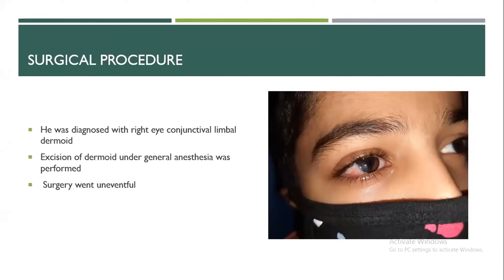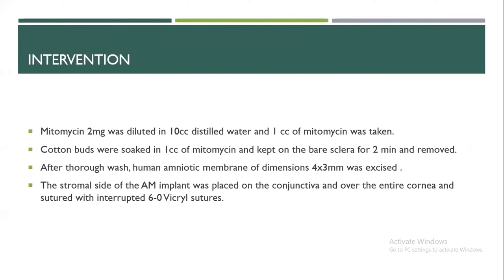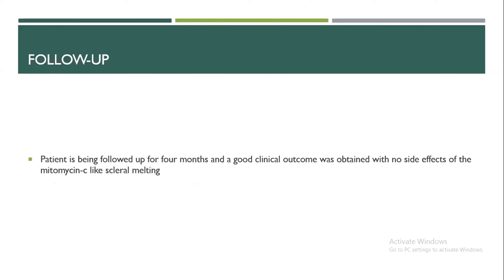Coming to the surgical procedure, he was diagnosed with right eye congenital limbal dermoid for which excision was done under general anesthesia and the surgery went uneventful. The intervention: we used mitomycin C of 2mg diluted in 10cc of distilled water, out of which 1cc was taken. After preparation of mitomycin C, a cotton bud soaked in this 1cc was kept on the base layer after excision of the limbal dermoid. A thorough wash was given with distilled water and a human amniotic membrane of dimension 4 by 3 mm was excised and sutured with interrupted 6-0 vicryl sutures. Follow-up: the patient has been followed for around 4 months with a good clinical outcome and no side effects of mitomycin C like sterile melting.